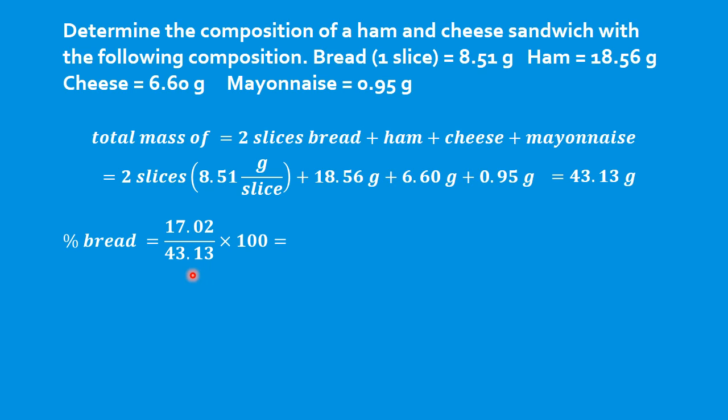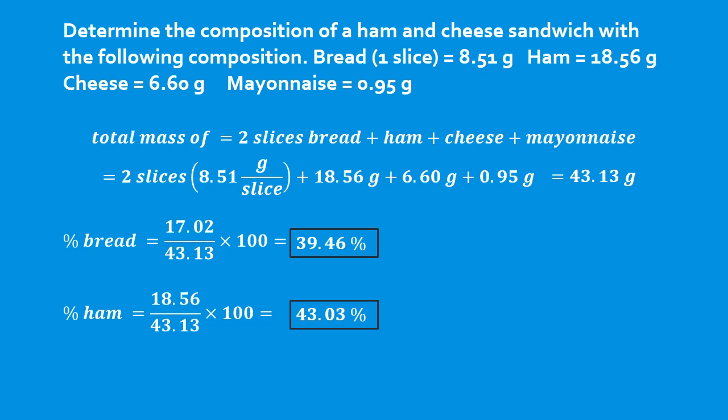So it's 17.02 grams divided by 43.13 grams, which is our total mass, times 100. That gives us 39.46%. You do the same thing for the ham: 18.56 grams out of the 43.13 multiplied by 100. That gives you 43.03%.